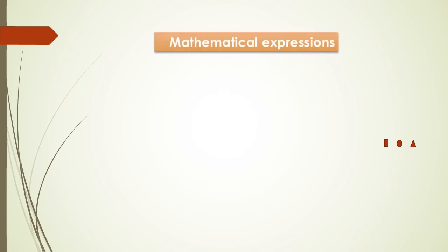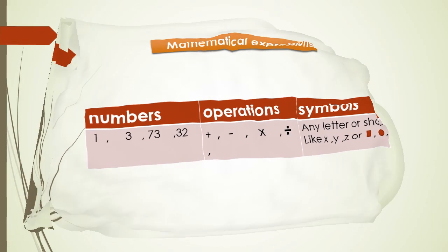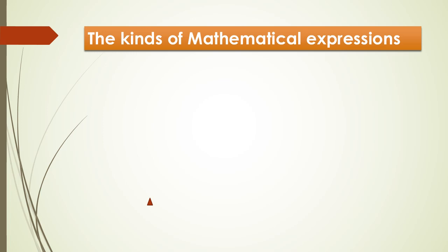Welcome, my dear students, class 5A and class 5B. I'll explain mathematical expressions today. First, look at the table. We have numbers, operations, and symbols. Numbers like 1, 2, 3, 4, 5, and so on. Operations: we have only four operations in math — plus, minus, multiplied by, and divided. Symbols are a letter or shape — letters like x, y, z and shapes like rectangle, triangle, square, and any other shape.